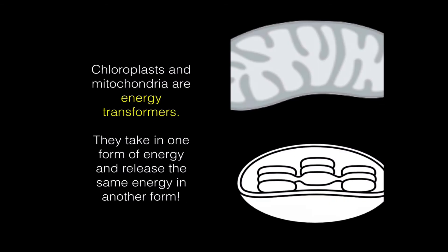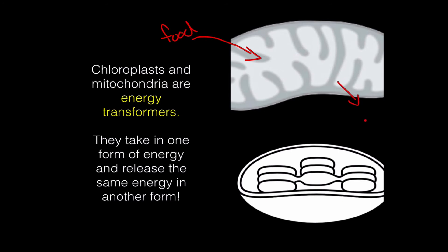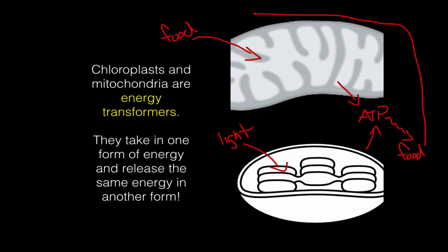Chloroplasts and mitochondria are both energy transformers. They're called energy transformers because they take in one form of energy and release that same energy in another form — because you can't create or destroy energy; that's a physics law. So to summarize: mitochondria take in energy in the form of food and output energy in the form of ATP. Chloroplasts take in light and put out ATP, and can also convert that ATP into food energy or glucose. That food energy can then be run through a mitochondrion, which plants also have. So plants can make their own food and then consume it with their mitochondria — they have the best of both worlds. They are producers and can consume their own food.